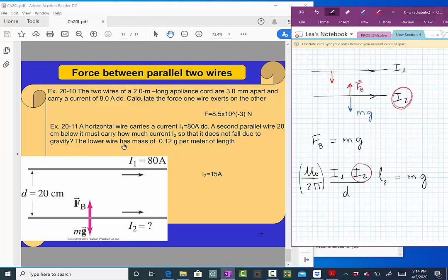Let's read what else they write in this problem. They say that this lower wire, the wire 2, has mass of 0.12 grams per meter. So, they don't give us the whole mass of the wire, they give us the mass per meter.